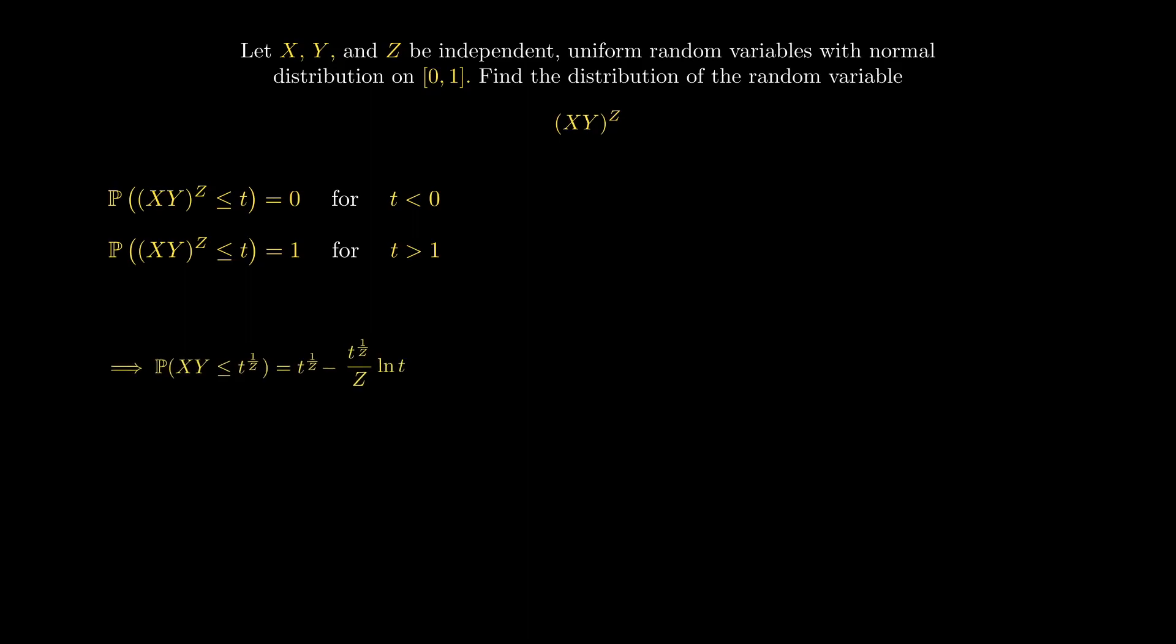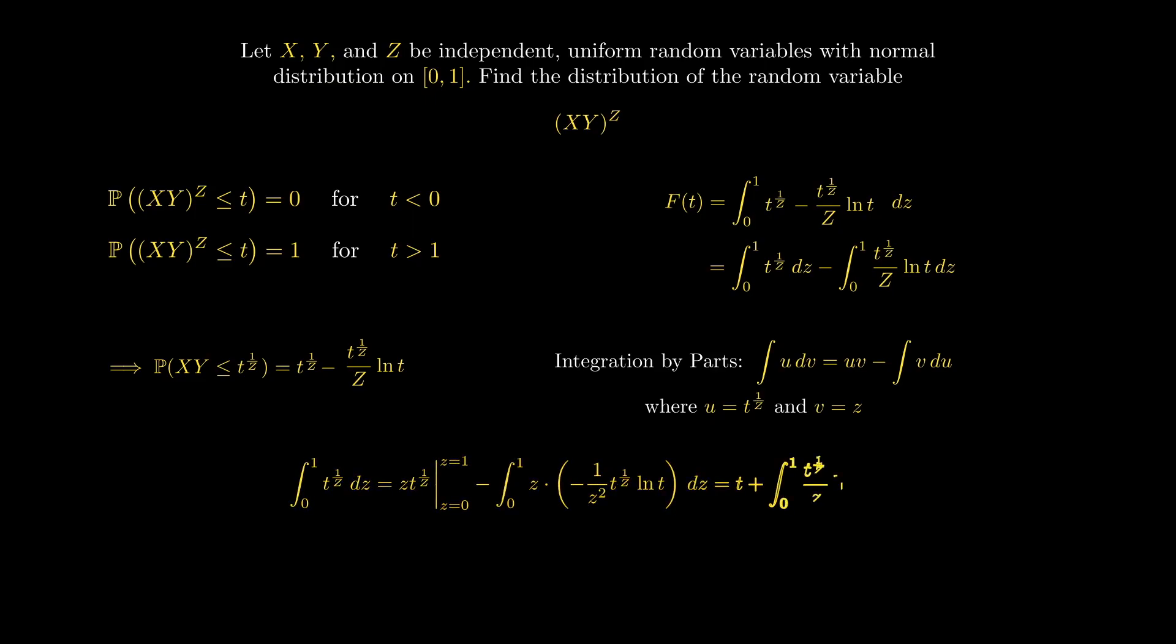To get the cumulative distribution function, we now just have to integrate this expression over z. Let's split up this integral into two integrals. We'll focus on the first of these integrals. Using integration by parts and letting u be t^(1/z) and v be z, we can evaluate this integral and get t plus the integral from 0 to 1 of t^(1/z) divided by z times the natural log of t dz.